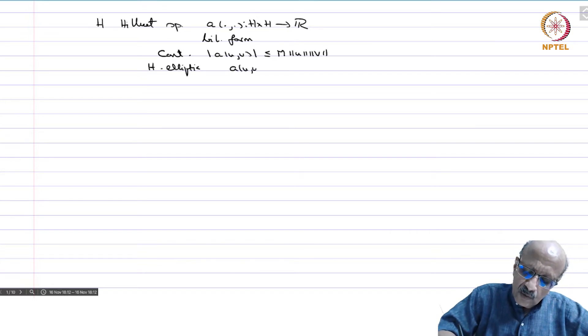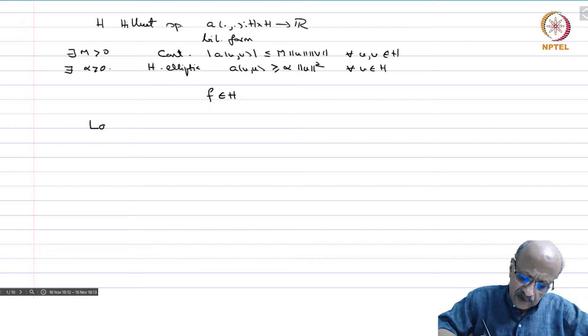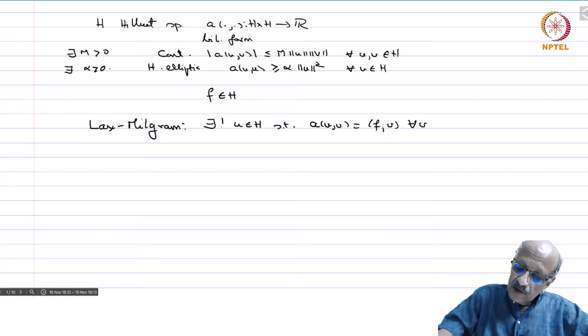It's H-elliptic, meaning A(u,u) ≥ α||u||² for all u,v in H with M > 0 and α > 0. Then if F is given in H, Lax-Milgram says there exists a unique u in H such that A(u,v) = F(v) for every v in H.